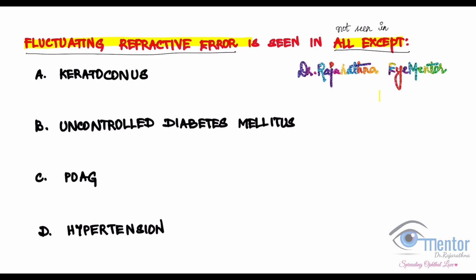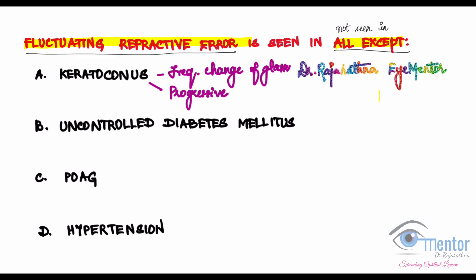Keratoconus — yes, there is a frequent change of glasses. Why? Because of the changing refractive error, because the condition is progressive. There is a progressive curvaceary myopia in the early stages, and the astigmatism also is progressive. So yes, it is seen here.